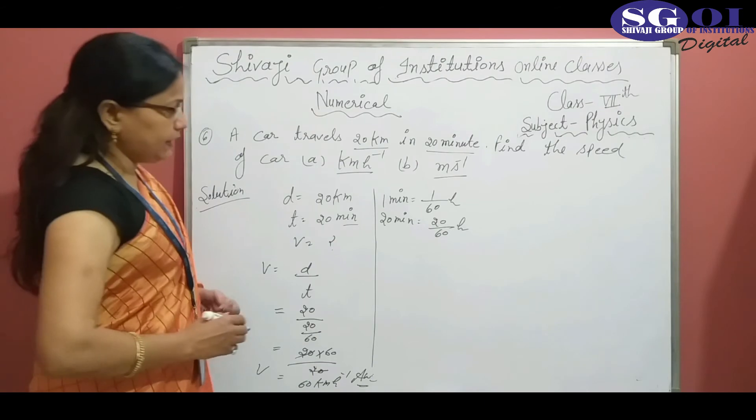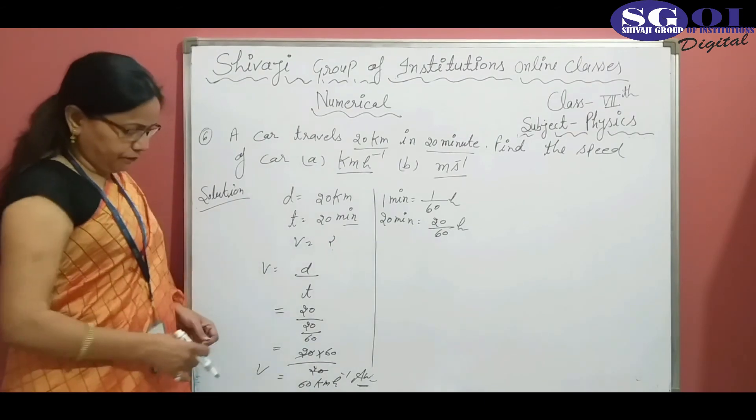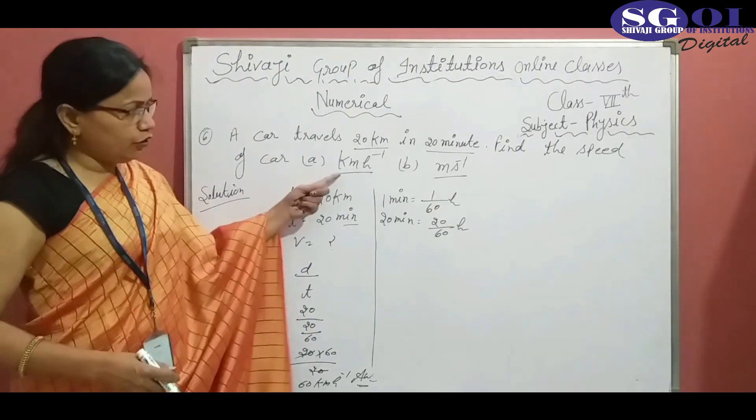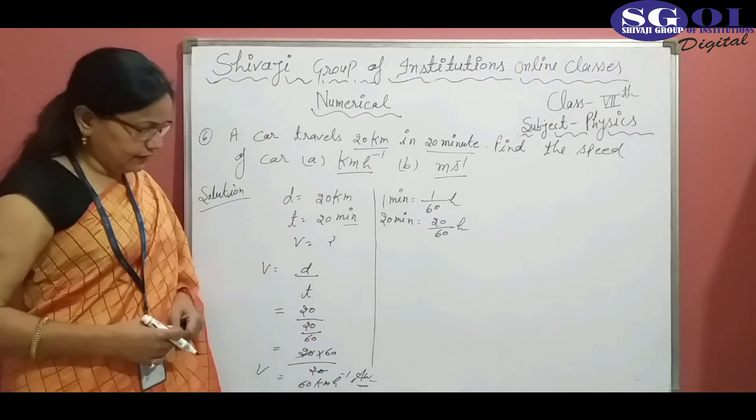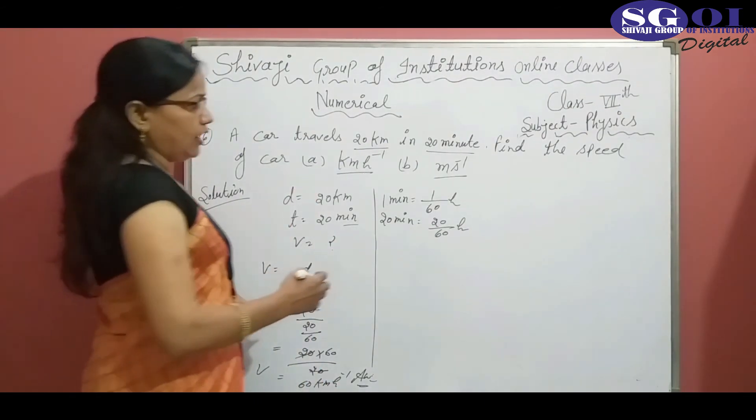So the speed of the car in kilometer per hour is 60.